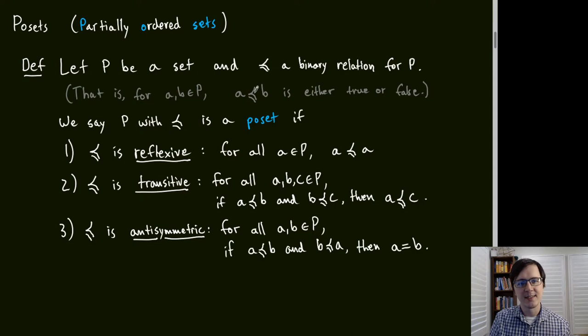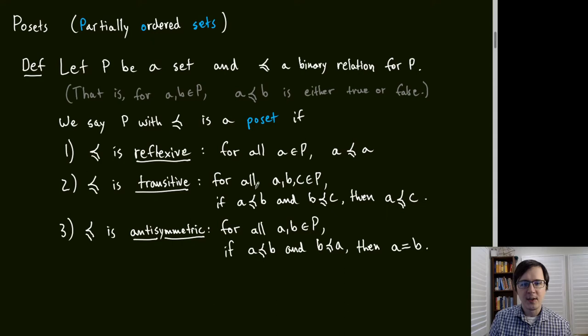We say P with this relation is a POSET if three things hold: (1) the relation is reflexive — for every element A, A is related to itself; (2) the relation is transitive — if A relates to B and B relates to C, then A relates to C; and (3) the relation is anti-symmetric — if A relates to B and B relates to A, then A equals B.